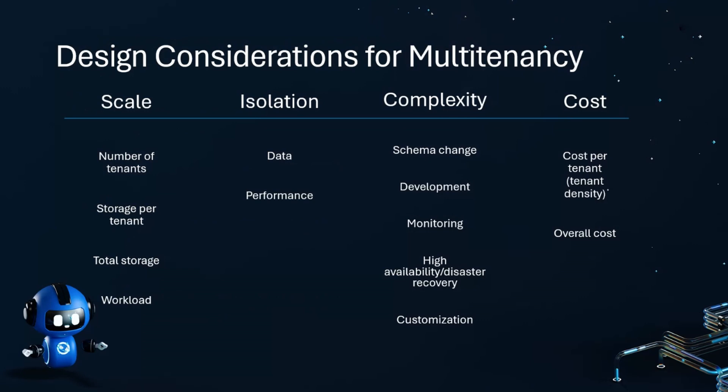You can organize multi-tenant database design considerations into four categories: scale, isolation, complexity, and cost. For scale, we want to understand the number of tenants. If my company has thousands of tenants, that will result in architecture that is dramatically different than if we only had five tenants. You'll also want to understand storage per tenant, total storage, and the characteristics of your workload.